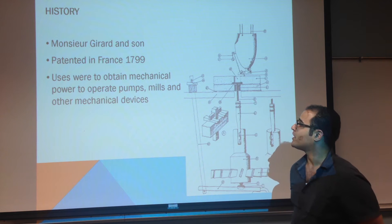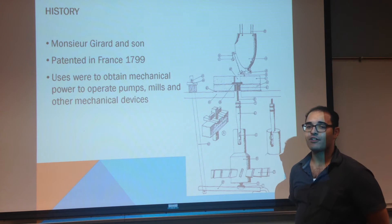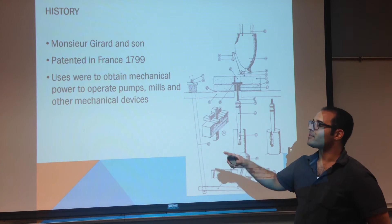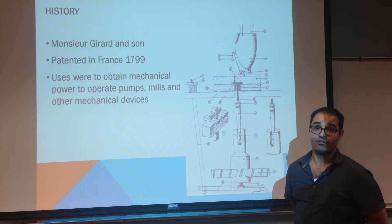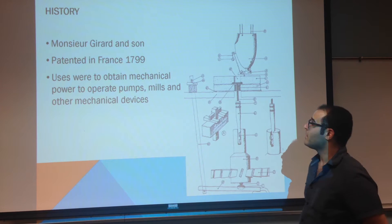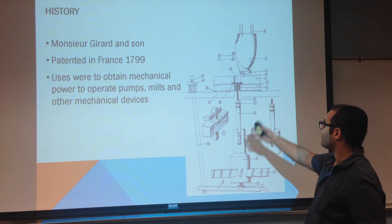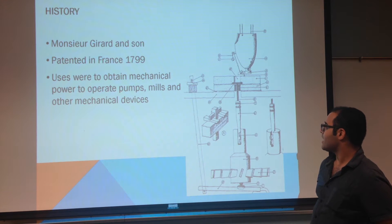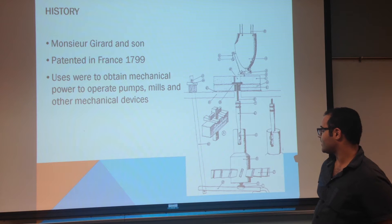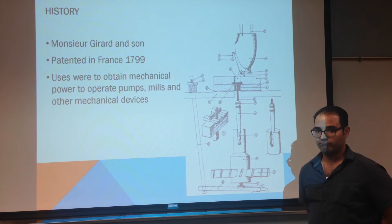The uses were to obtain mechanical power, to operate pumps, mills, and other mechanical devices. What you see here is an illustration of a typical mill from the time — this one is actually powered with a windmill.